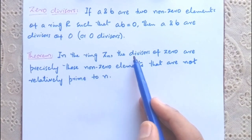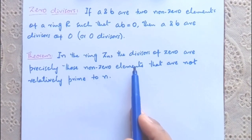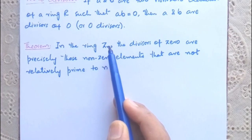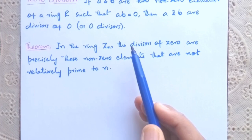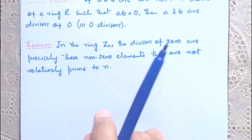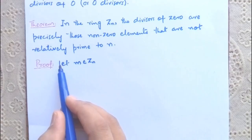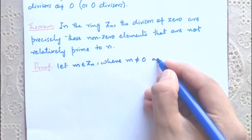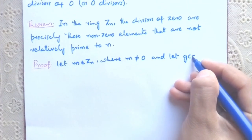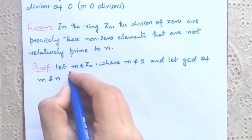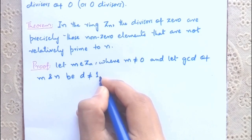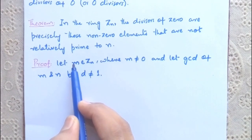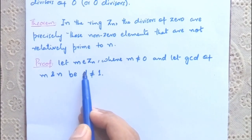Theorem: In the ring Zₙ, the divisors of 0 are precisely those non-zero elements that are not relatively prime to n. That is, in a ring Zₙ, the numbers that are divisors of 0 are those whose GCD with n is not equal to 1. To prove it: let m belong to Zₙ where m ≠ 0, and let GCD(m, n) = d, where d ≠ 1. So m is a member of Zₙ and m is not relatively prime to n, meaning GCD(m, n) = d.